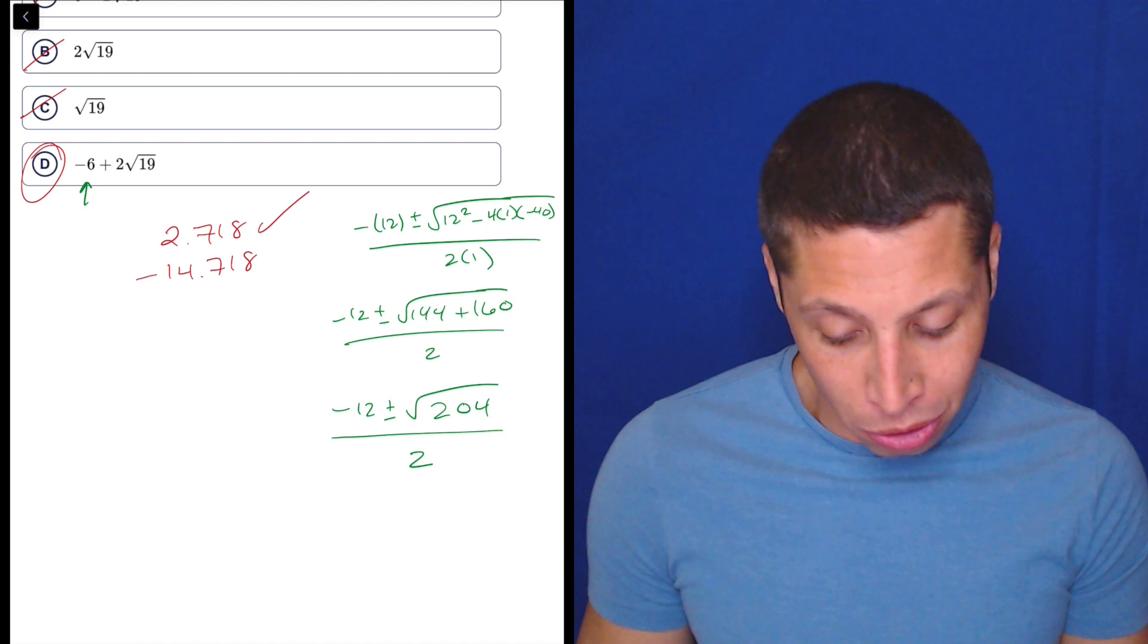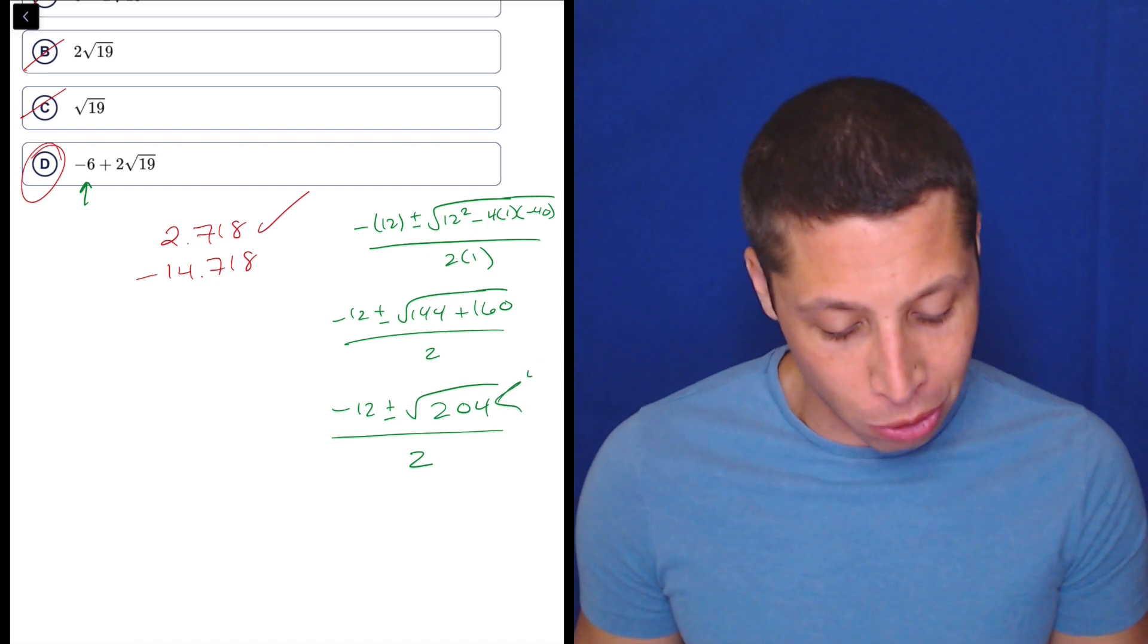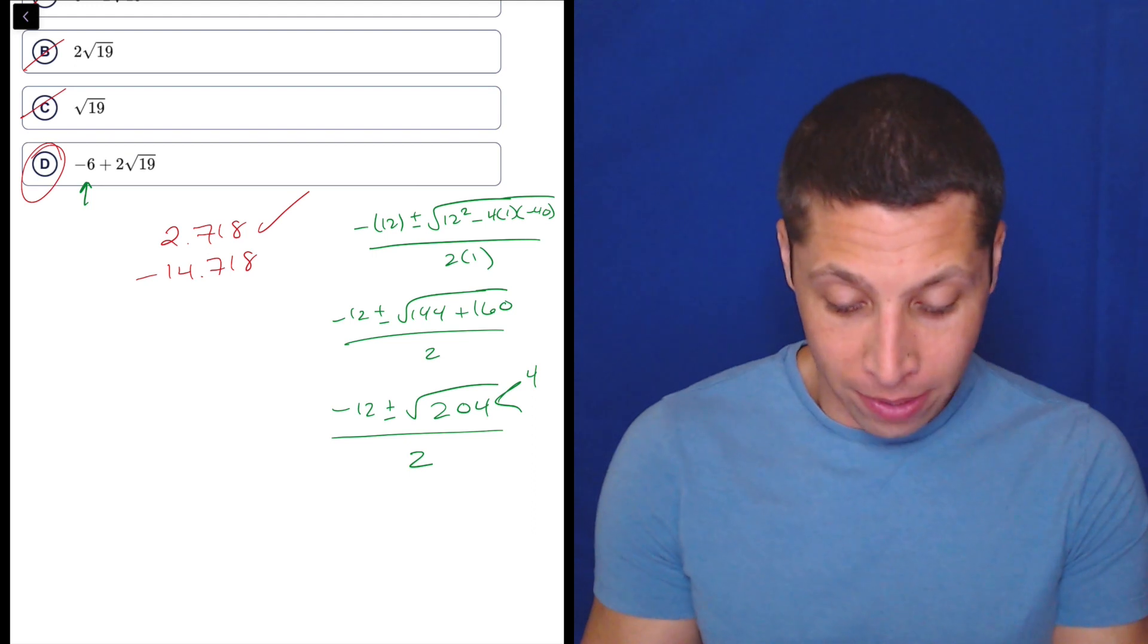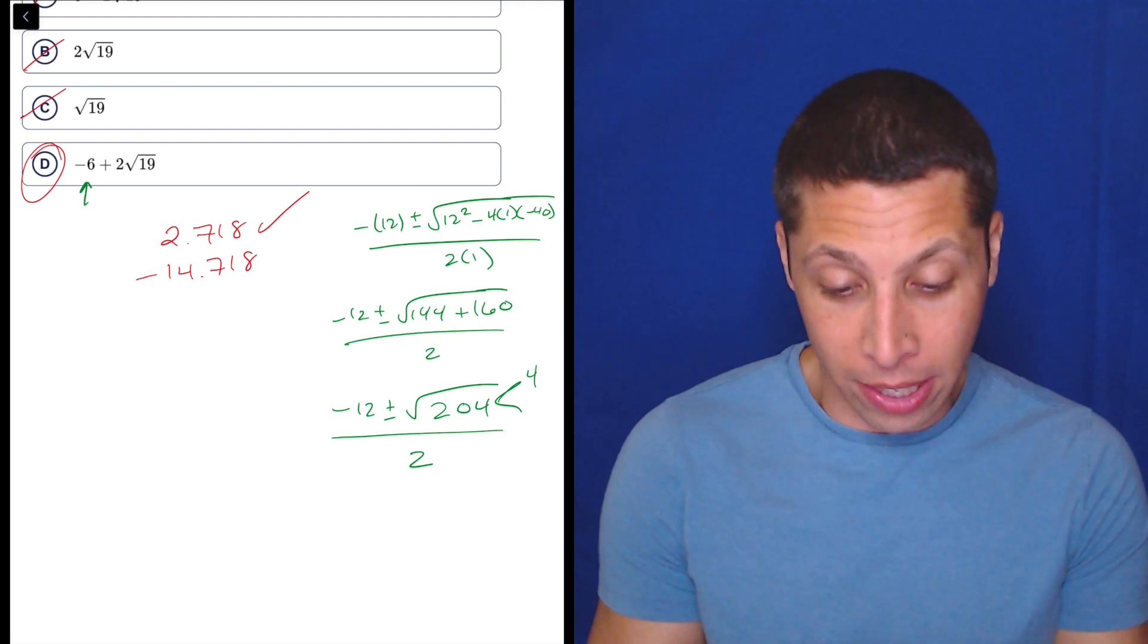I mean, what we're supposed to do is reduce the radical, right? And be like, okay, what goes into 204? Well, 4 does. And then 204 divided by 4 is 51.